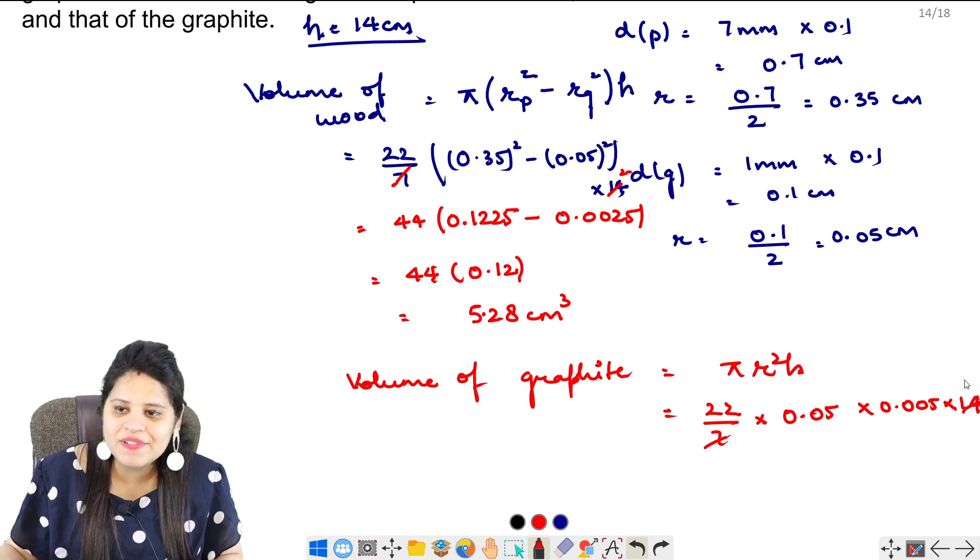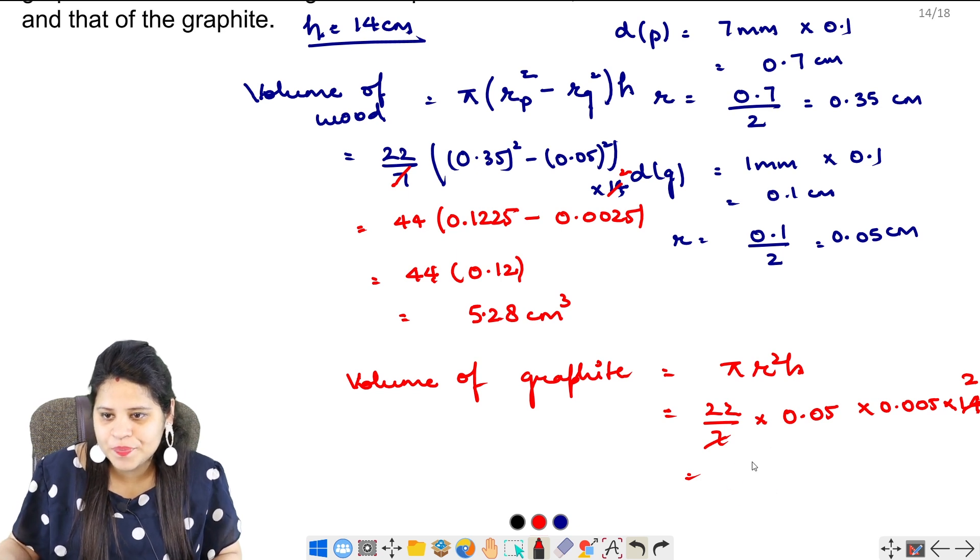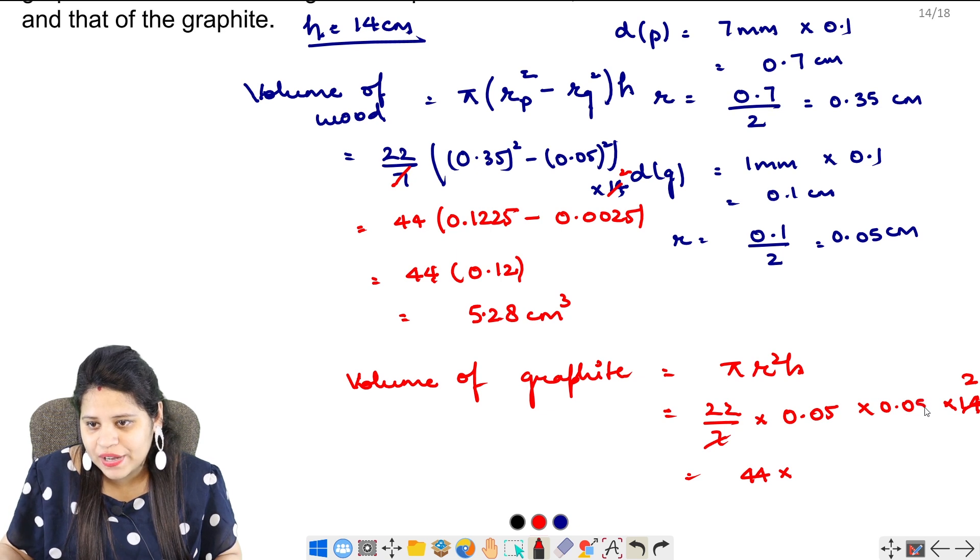Again, 7, 1's are 7. 7, 2's are 14. 2 into 2. It will be 44. And I will write this again. So this is 44 multiplied by 0. Here I have extra 0. 0.05 is this.